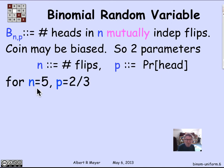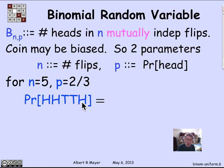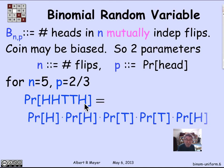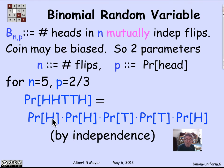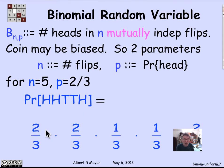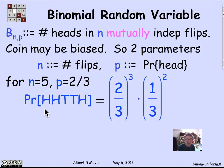For example, if N is 5 and p is 2/3, what's the probability that we consecutively flip H, H, T, T, H? Because the flips are independent, this is simply the product of the individual probabilities: p × p × (1−p) × (1−p) × p, which gives (2/3)³ × (1/3)². So the probability of the sequence HHTTH is (2/3)³ × (1/3)².